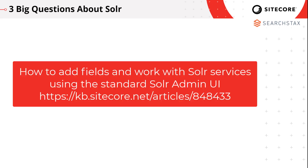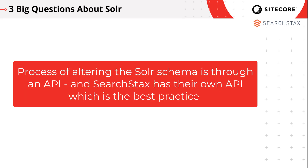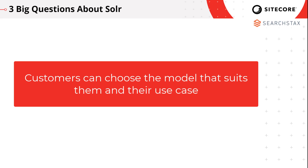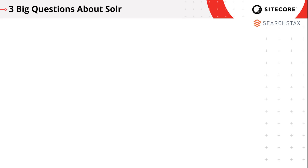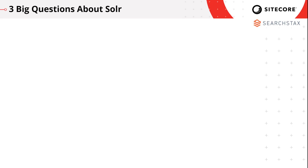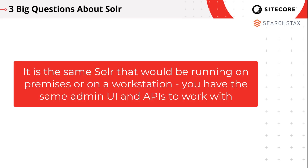For adding fields, there's documentation on Sitecore's site. The process of altering your Solr schema is through an API — whether it's the ZooKeeper API or SearchStax has their own API — which is probably best practice for working with it, though customers can choose the model that suits them. For adding collections, Sitecore's administrative UI is always available. Customers sometimes wonder whether it's the same Solr they'd run on-premises or on a dev workstation — and it is, in the sense that you have the same admin UI, so you can work with collections and fields that way, or use the APIs to add a collection or a Solr core.